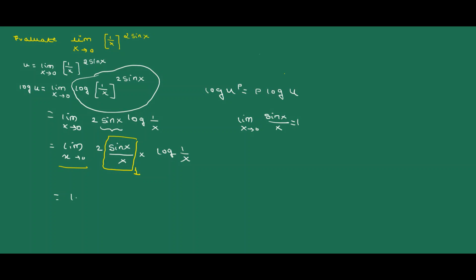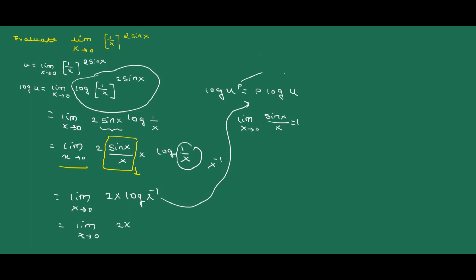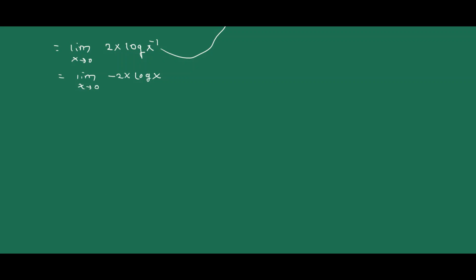Then we are left with limit x tends to 0 of 2x·log(1/x). Now 1/x can also be written as x^(−1). So by using the log property again, in place of p we have −1 and in place of u we have x, giving us −log(x). So this equals limit x tends to 0 of −2·log(x) / (1/x), writing log x in the numerator and transposing x to the denominator.